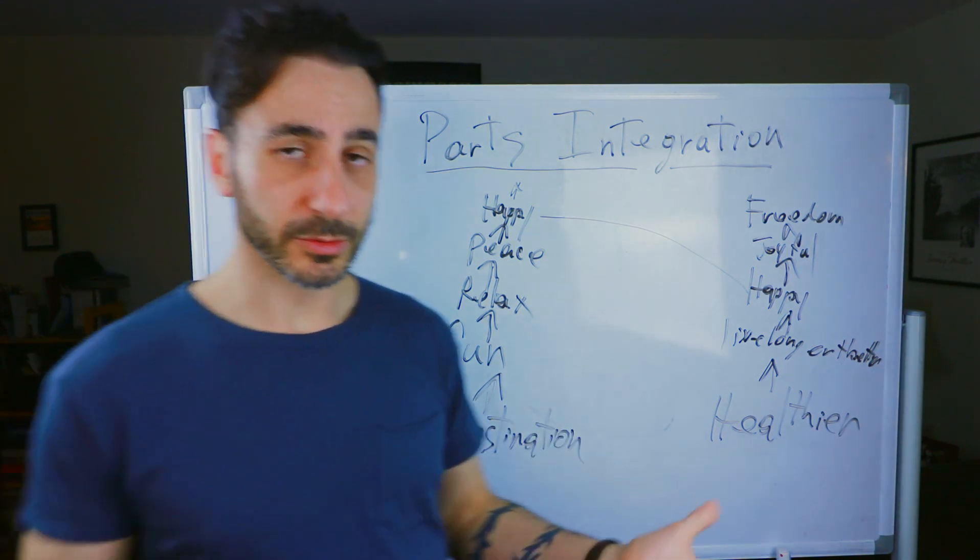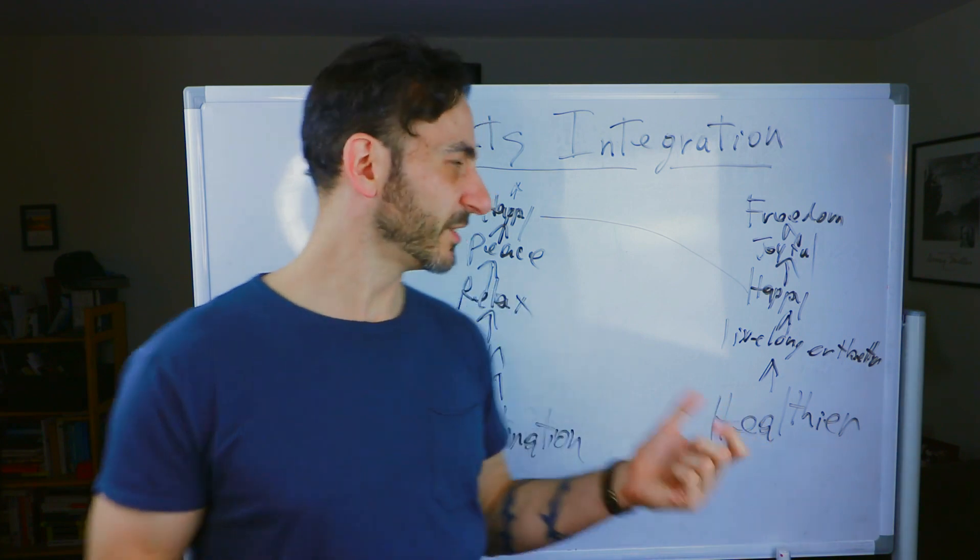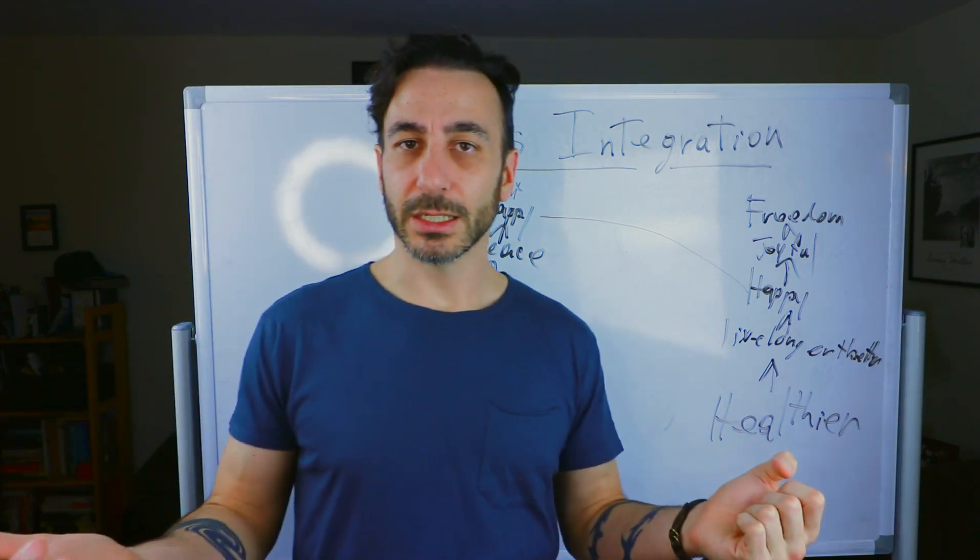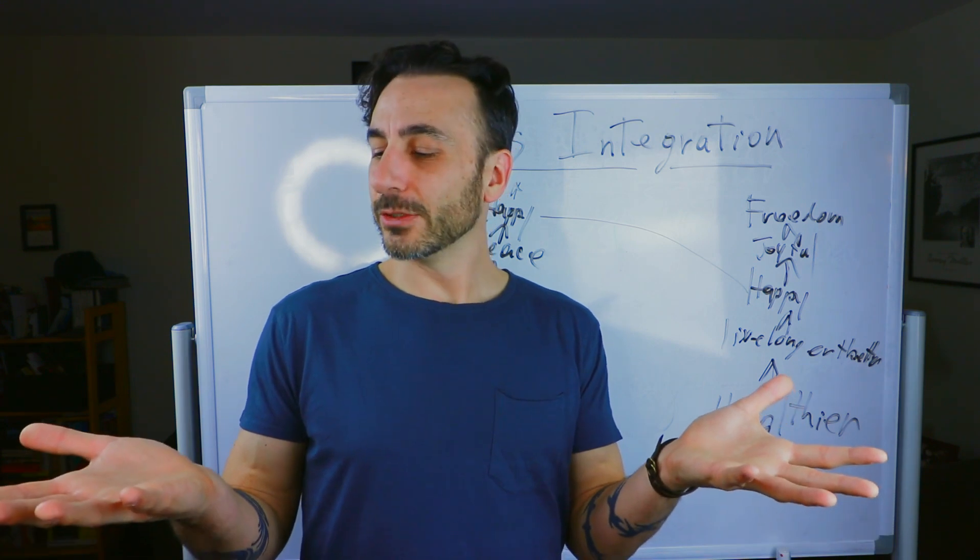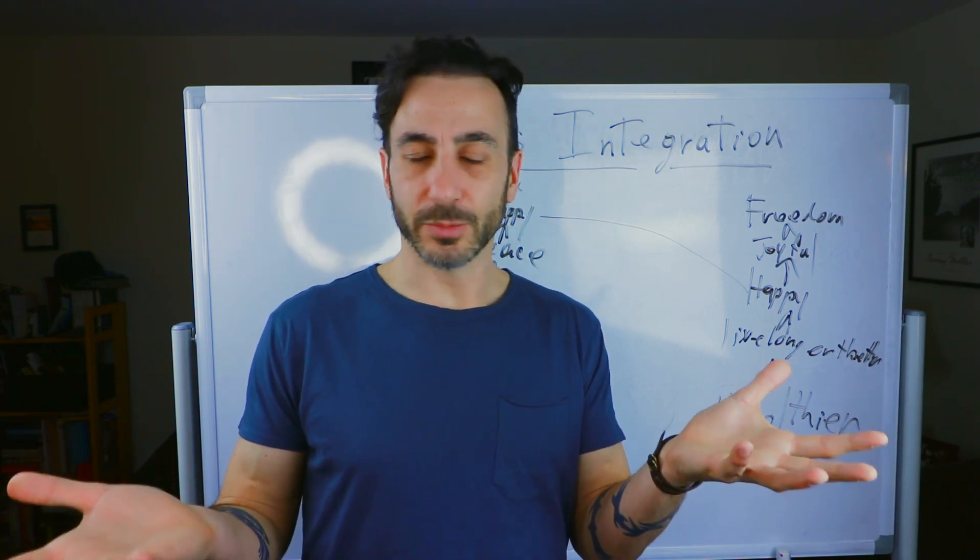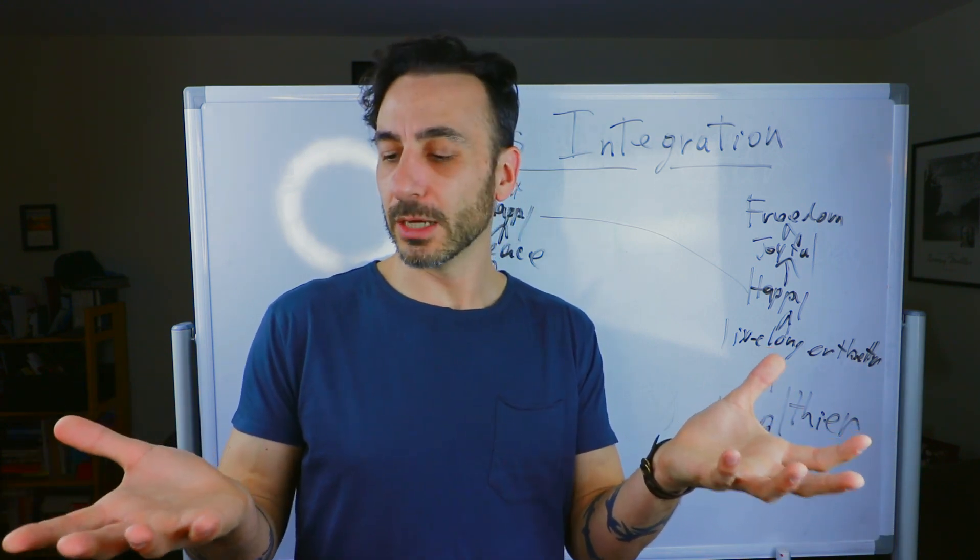Now, some people use the visual squash method, which isn't quite as in-depth as this. And then you hold the two parts out on your hands like this and you find the positives in both. And then you say, okay, well, how can we work together? And then you try to bring this together.